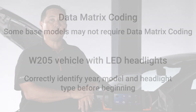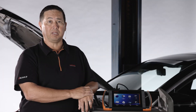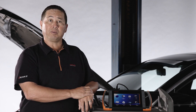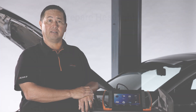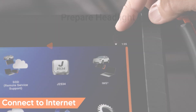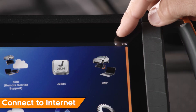If you have the original headlight and it communicates normally, you have the option to transfer data to the new headlight. Prepare the car for replacement and remove the old headlight. Once unbolted and ready to remove, leave it plugged in until the old data is read. During the adaptations, you will need to enter data from the 2D barcodes located on the new headlight assembly.